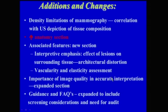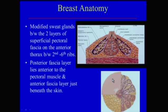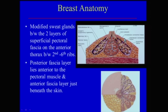We've expanded and made much more descriptive the anatomy section. The breast is described as a modified sweat gland between two layers of superficial pectoral fascia on the anterior thorax between the second and sixth ribs. The posterior fascia layer lies just anterior to the pectoral muscle and the anterior fascia layer lies just beneath the skin. The breast is made up of 15 to 20 segments of major ducts and branches. The lobules radiate from the nipple and subdivide into lobules. Subcutaneous connective tissue forms septa — the Cooper's ligaments — between the lobes and lobules, going from the dermis to the superficial fascia, and can often be identified with ultrasound.